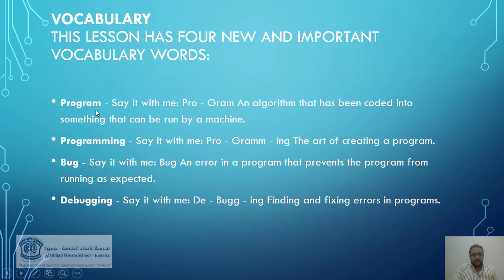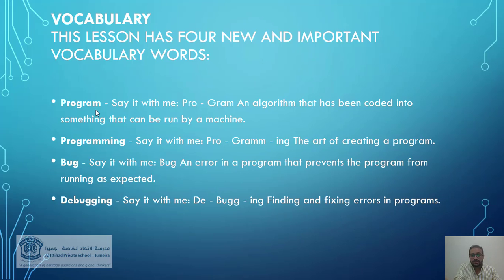Someone might ask: what does "algorithm" mean? An algorithm is a process or set of rules you need to follow — rules used in calculations to solve operations or problems, especially using a computer. I hope everyone understands; if you have any questions later, you can ask me.